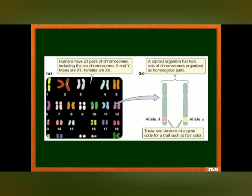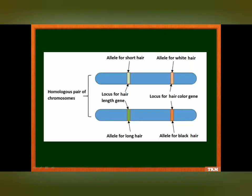On this homologous pair of chromosomes, one locus is for the hair length gene — one allele codes for short hair, the other for long hair. Another locus is for the hair color gene — one allele codes for white hair color, the other for black hair color. So depending upon which allele is dominant, that particular trait will be expressed.